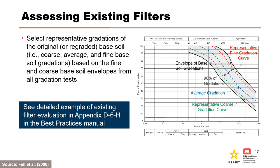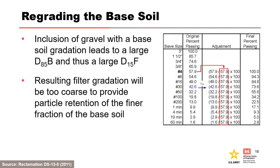The representative base soil gradation represents 90% of all gradation tests. The concept of re-grading the base soil was developed by Sherrard to account for broadly graded soils. Broadly graded soils can be internally unstable and have inadequate particle retention, and re-grading corrects for this phenomenon. Permitting the inclusion of gravel within the base soil gradation will lead to a large D85 of the base and subsequently a large D15 of the filter. Since gravel particles don't have any particle retention capability in broadly graded or gap-graded soils, the resulting filter gradation will be too coarse to provide particle retention of the finer fraction of the base soil.